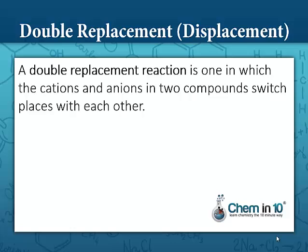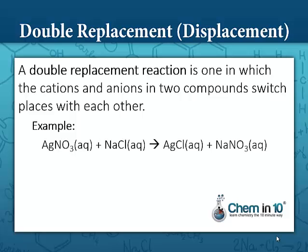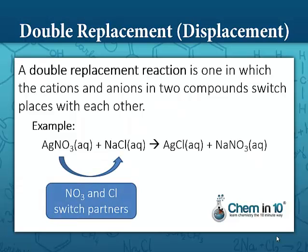A double replacement reaction is one in which the cations and anions in two compounds switch places with each other. Here we have silver nitrate reacting with sodium chloride to form silver chloride and sodium nitrate. The nitrate and chlorine switched partners: nitrate now combines with sodium to form sodium nitrate, and chlorine now combines with silver to form silver chloride. In a sense, they come to the dance with two different partners, switch partners, and leave with their new partners.